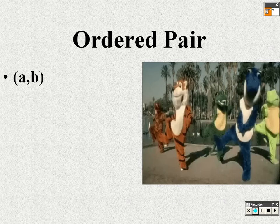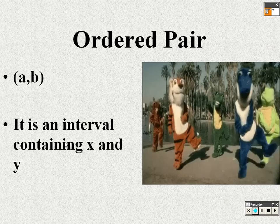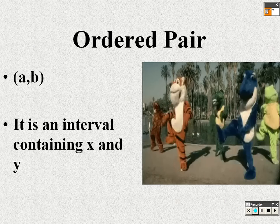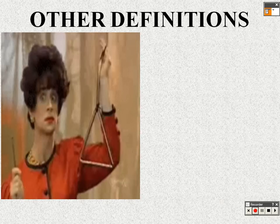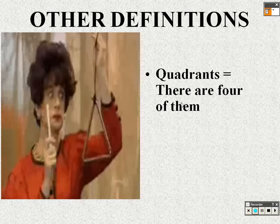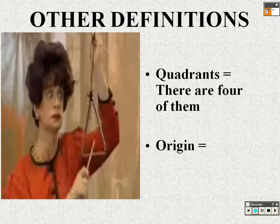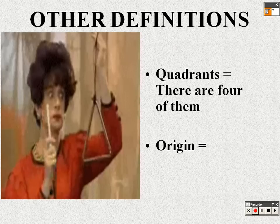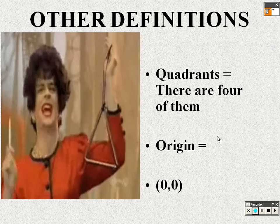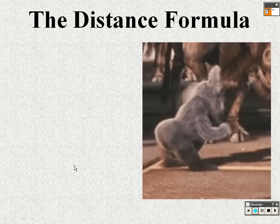An ordered pair is just your x and y — two numbers that define a point. An ordered pair is also an interval containing an x and a y. There are four quadrants, and the origin is the point (0, 0) at the center of the graph.